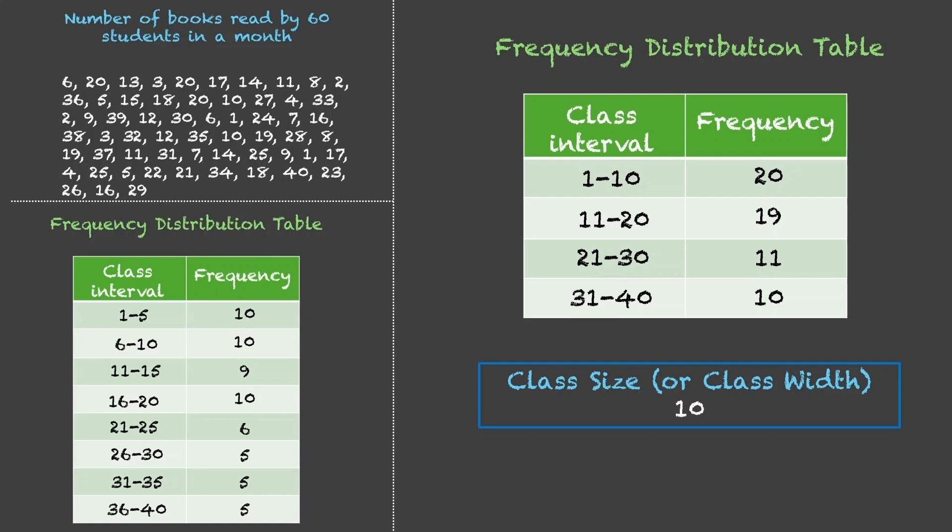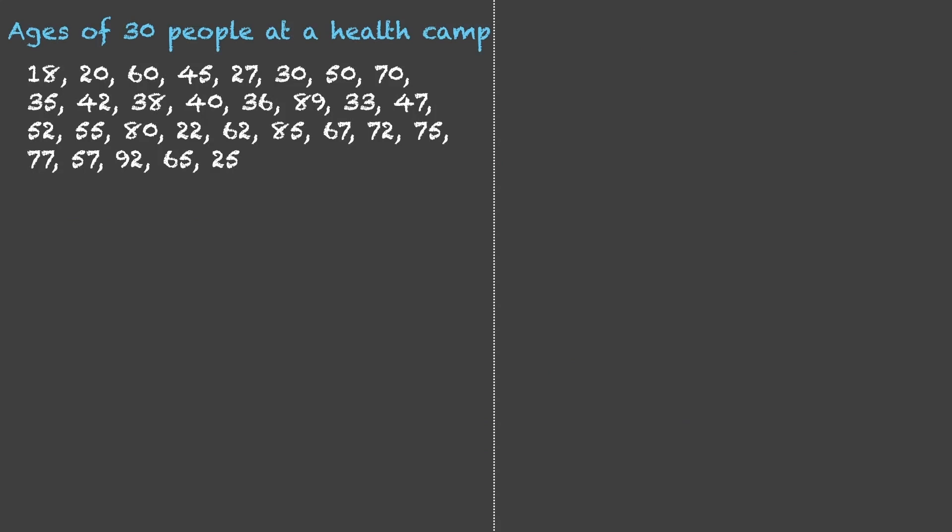Now, let us see how we will create this table, frequency distribution table, from scratch. Let us start with a fresh data set. We have been given the ages of 30 people at a health camp. The very first thing that we will do is find the range of the data. Range of the data is given by maximum value minus minimum value. Here, the maximum value is 92 and the minimum is 18. So, range is 92 minus 18, which is 74.